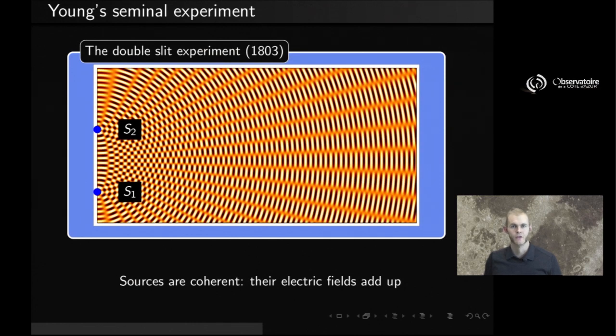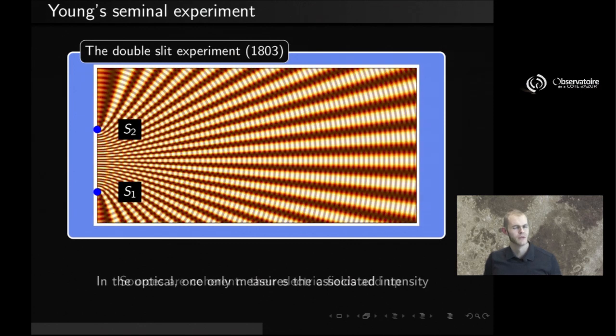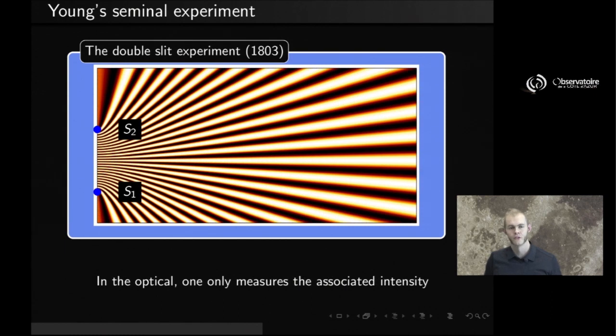Now, the detectors we use, just like our eyes, are sensitive to the intensity associated to that electric field. That is the square modulus of that electric field, which looks somewhat different, something like this, that does not vary with time. And what you see are interference fringes.